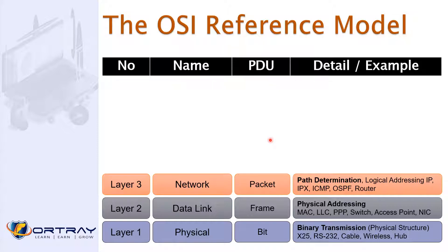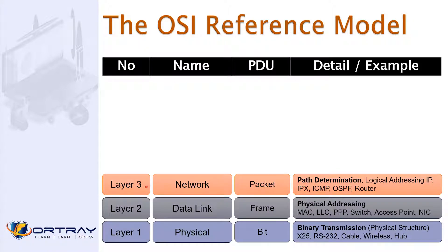This is the PDU — the protocol data unit — and each layer has its own name and number. There is an open standard, and I will come back to why. Starting from layer one, we call it the physical layer and refer to data as bits. When we say frame, it means we are talking about layer two, the data link layer. When we say packet, we are talking about layer three, which handles IP networks and IP communication.